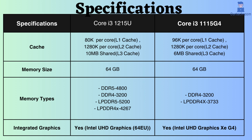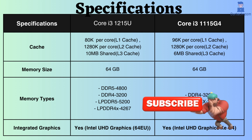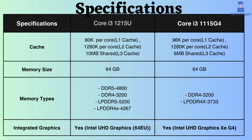The L1 cache size of the Core i3-1215U is 80 KB per core, whereas that of the Core i3-1215G4 is 96 KB per core. Because of its larger L1 cache, the Core i3-1215G4 can store more frequently accessed data and instructions, potentially improving performance for tasks that are used frequently. The L3 cache is the largest and slowest cache, shared among all cores, and is used for less frequently accessed data. A larger L3 cache for the Intel Core i3-1215U can benefit multitasking and handling large datasets.